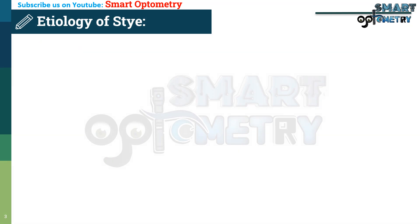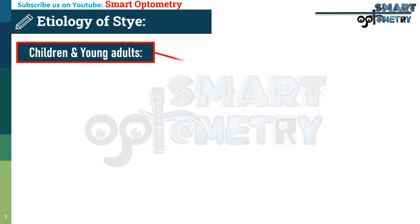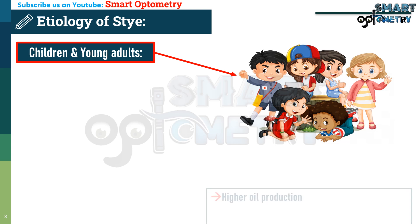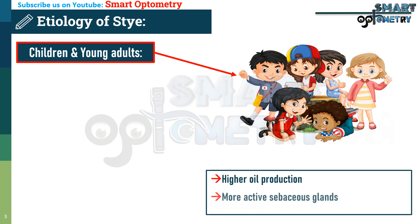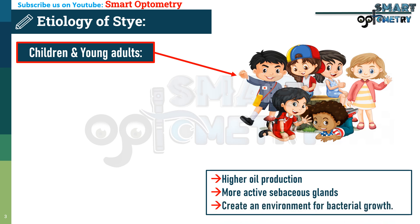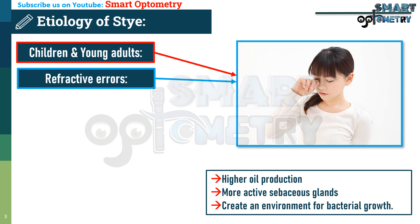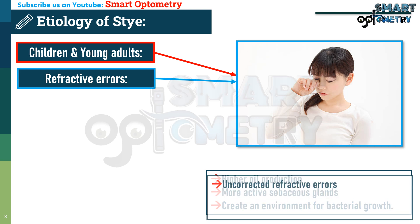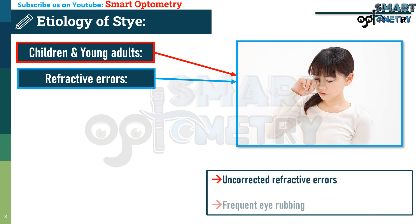Regarding the etiology of external hordeolum: first, children and young adults are at higher risk because higher oil production and more active sebaceous glands in younger individuals create an environment conducive to bacterial growth. Second, uncorrected refractive errors cause frequent eye rubbing, which spreads bacteria to the eyelid margins and blocks glands, leading to infection.